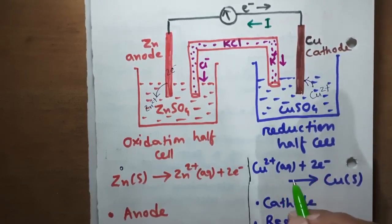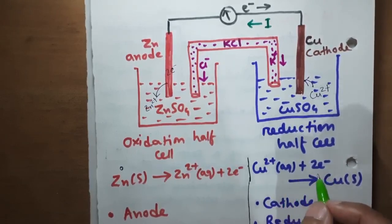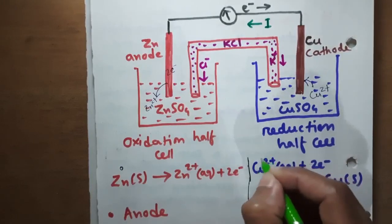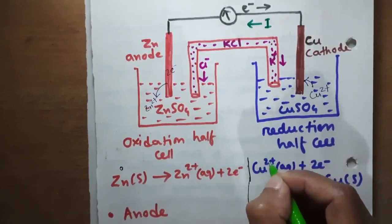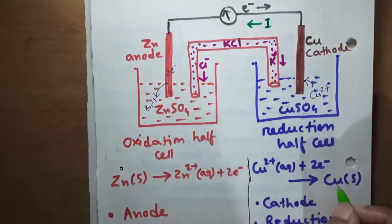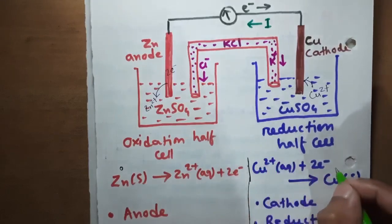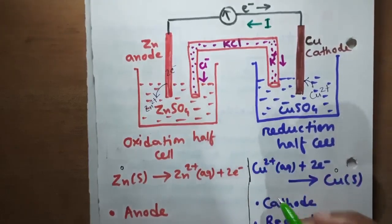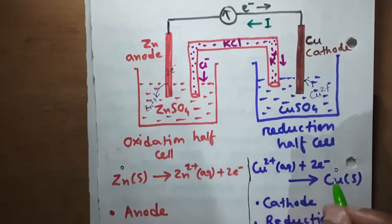The oxidation number of copper goes from plus 2 in solution to copper 0 as solid. So this is a reduction reaction.